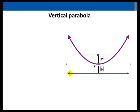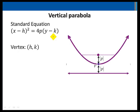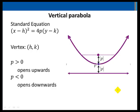A vertical parabola can either open up or down. The standard equation for a vertical parabola is (x - h)² = 4p(y - k), where the vertex is (h, k). If p is greater than 0, the parabola opens upwards. If p is less than 0, the parabola opens downwards.